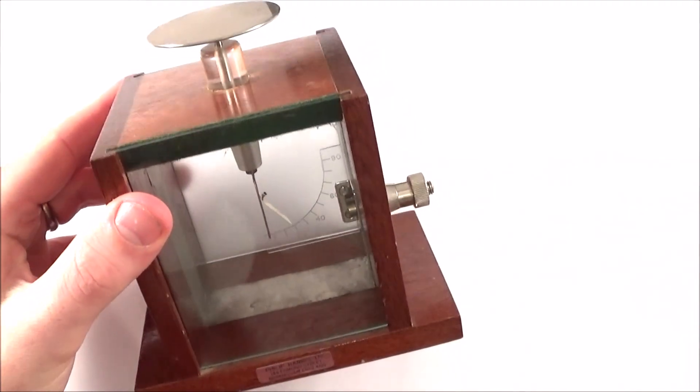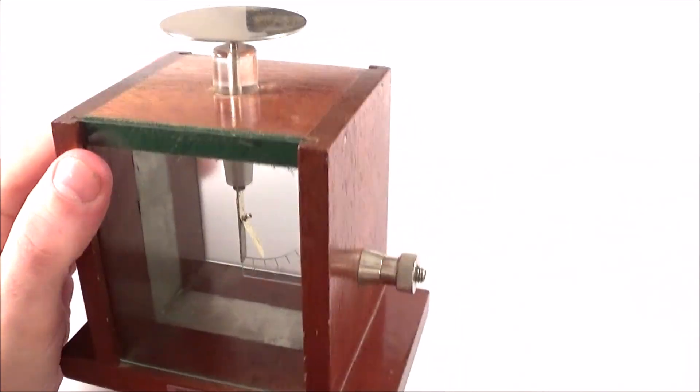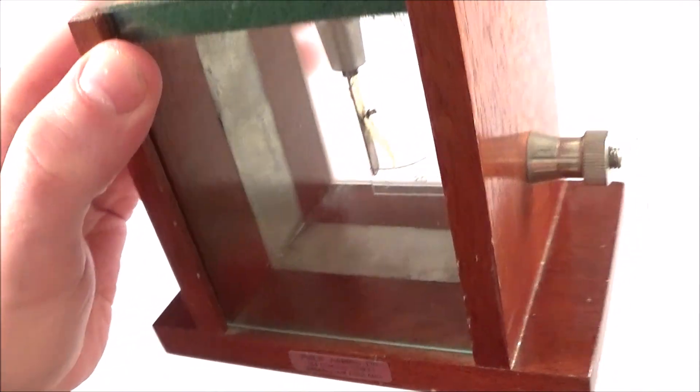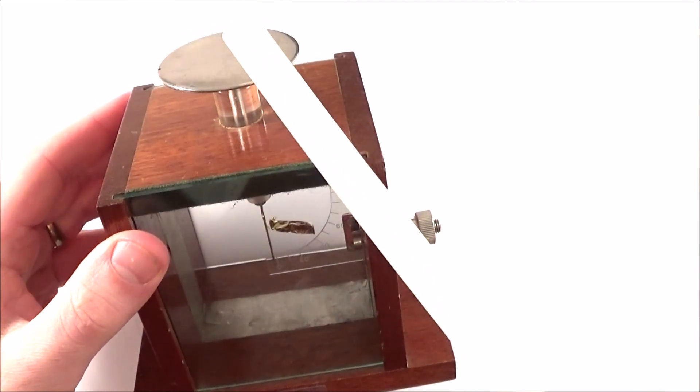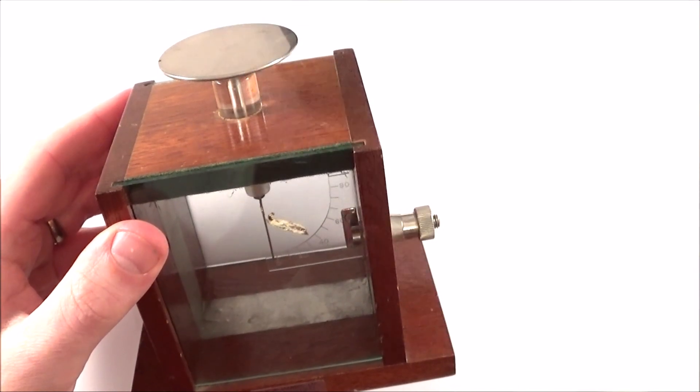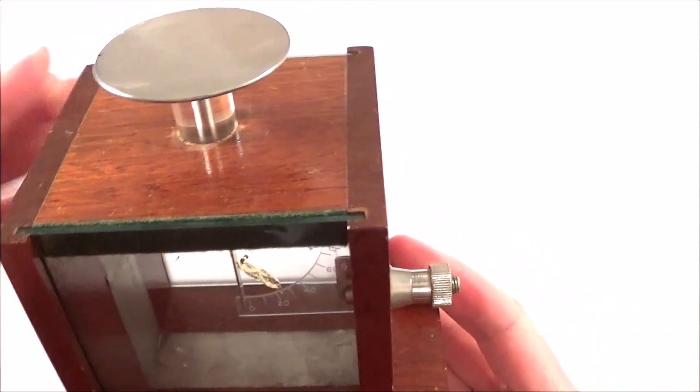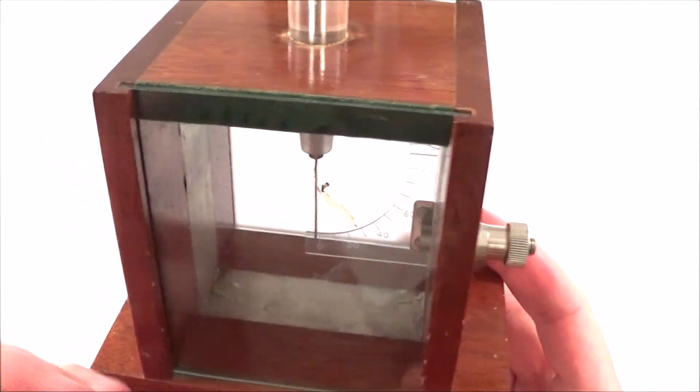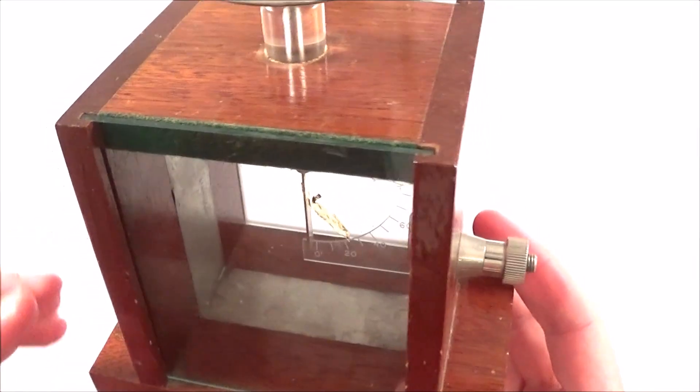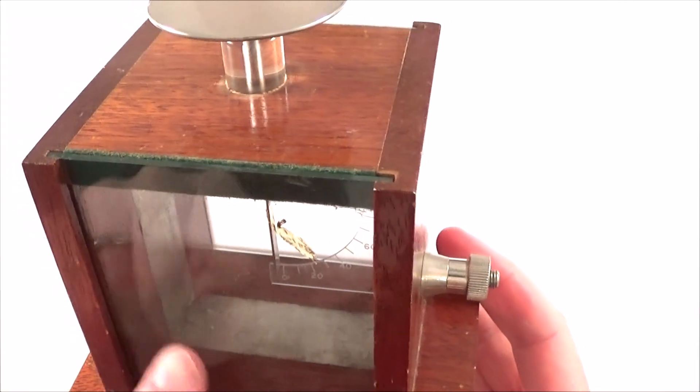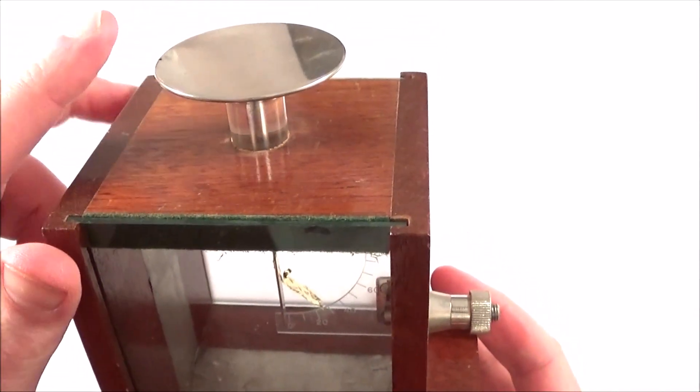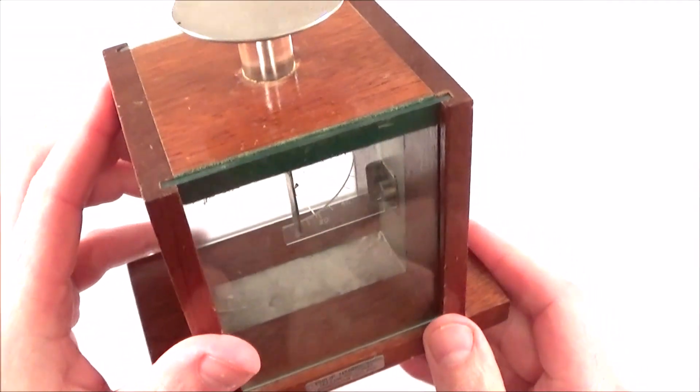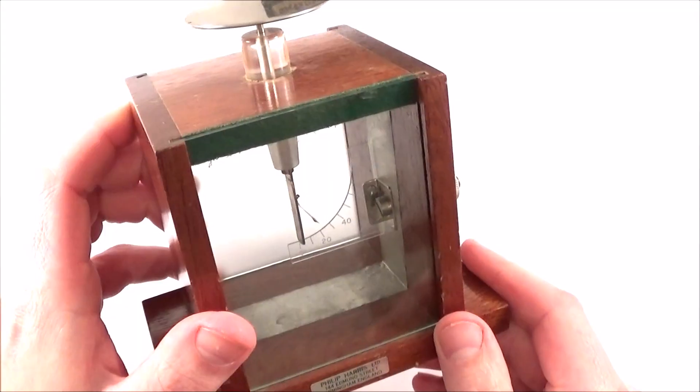What I have here is a device called a gold leaf electroscope. At the bottom we have a very small piece of gold leaf, and if I charge this up by touching a charged polythene rod on top of it, the metal parts are all equally charged with the same charge, and that means the gold is being repelled from the piece of metal at the bottom. If I touch the top we can then discharge it and it falls back down, and this is one of the devices that can be used to show the photoelectric effect.